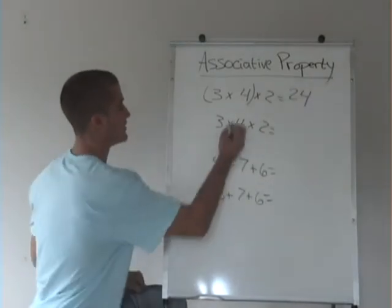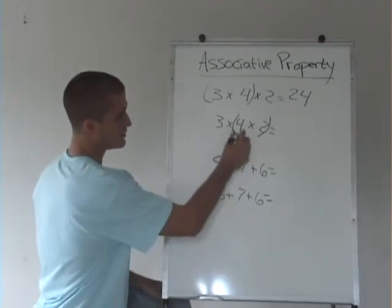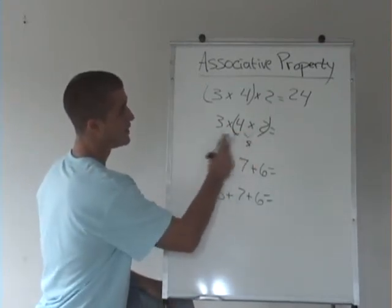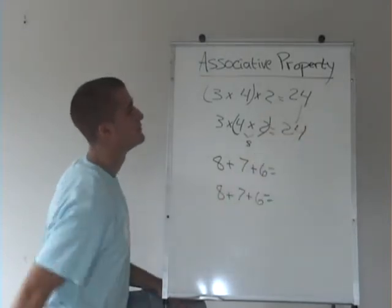Or we can start with 4 times 2 by putting parentheses around them and get that this is equal to 8, and 3 times 8 is also 24, and you can see that these numbers match up.